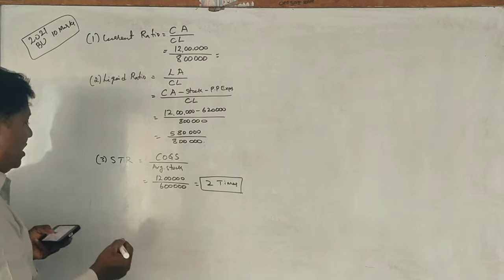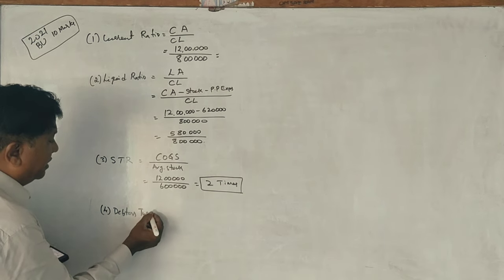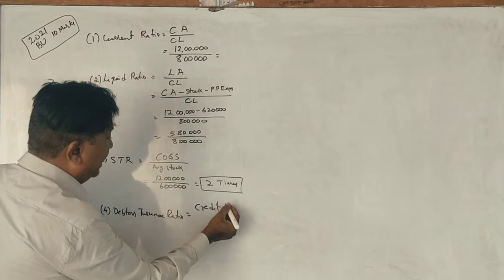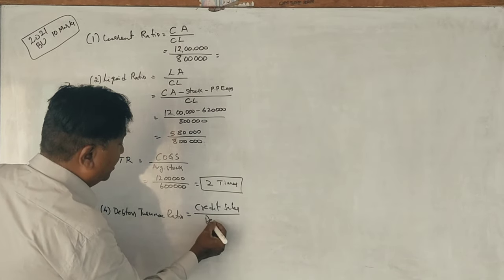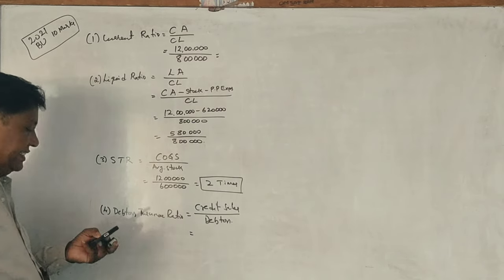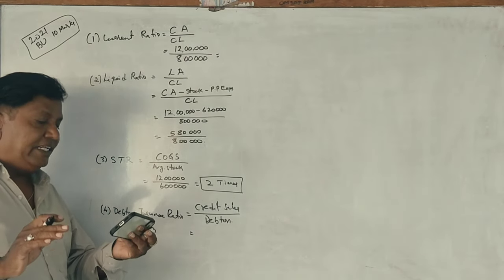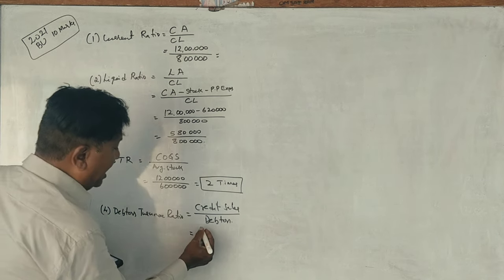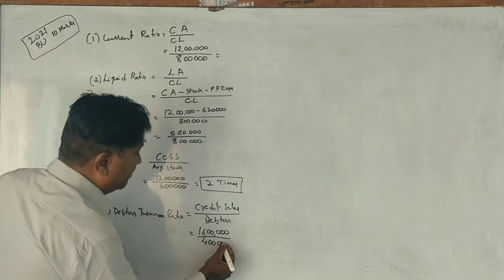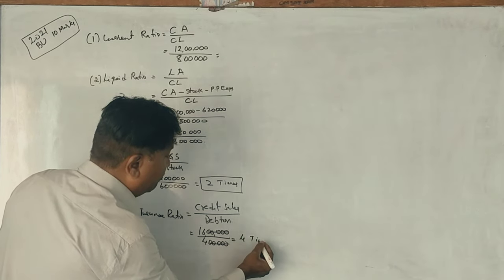Next, debtors turnover ratio. The formula is credit sales divided by average debtors. Sales are assumed to be all credit sales, totalling 16 lakhs. Debtors are 4 lakhs. So debtors turnover ratio is 16 lakhs divided by 4 lakhs, which equals 4 times.